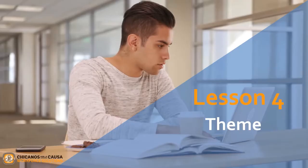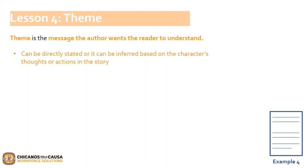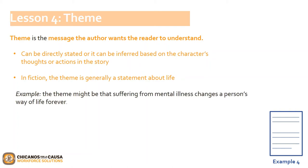We are now going to move on to Lesson 4, Theme. We have previously mentioned theme in Chapter 2 with regards to texts related by theme or topic. But now let's get a bit deeper into what theme is. Every story has a subject — the subject might be about suffering from mental illness or growing up in a poor neighborhood. But there is more to a story than a subject. You need to look for what the writer is trying to say about the subject. That is the theme. Theme is the message the author wants the reader to understand. Theme can be directly stated or it can be inferred based on the character's thoughts or actions. In fiction, the theme is generally a statement about life. For example, the theme might be that suffering from mental illness changes a person's way of life forever.